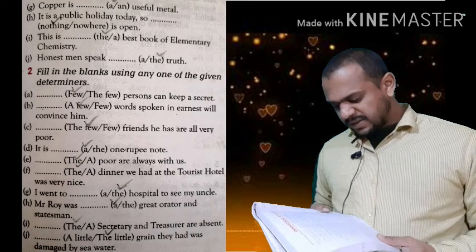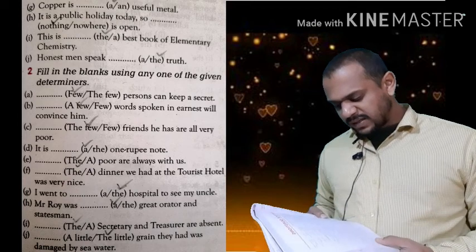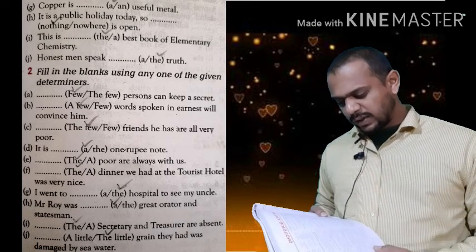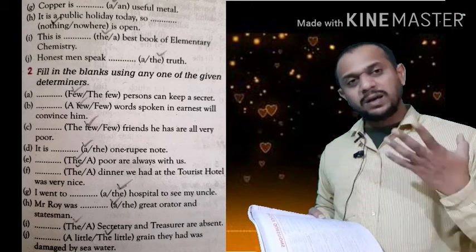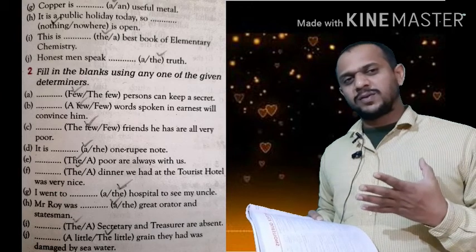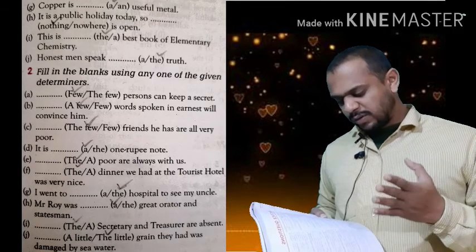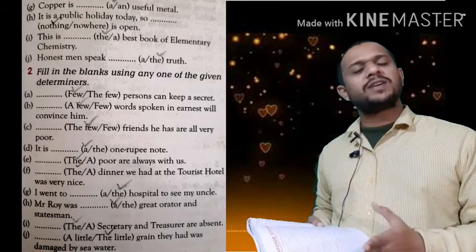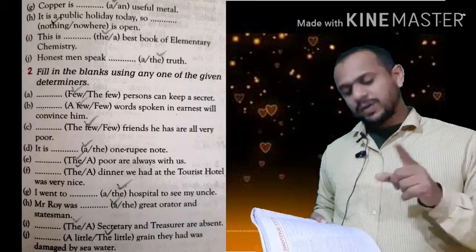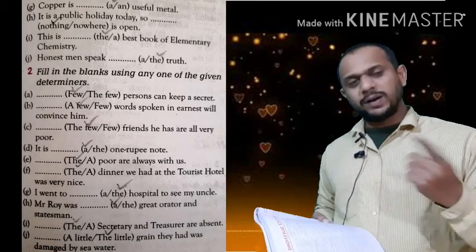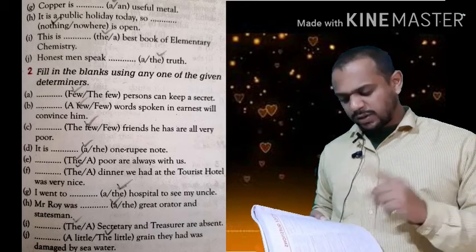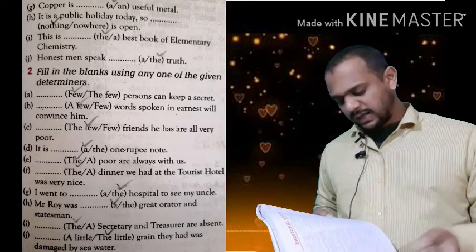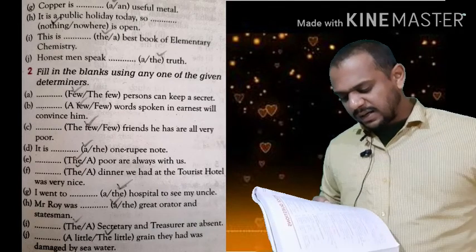Exercise: 'Mr. Roy was dash great orator and statesman.' Here we keep indefinite article 'a' before 'great orator' — not 'the great,' but 'a great orator.'